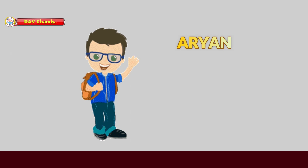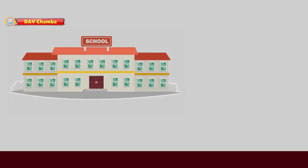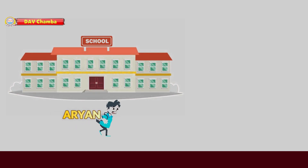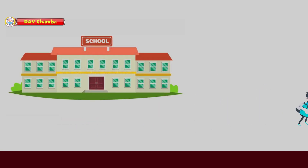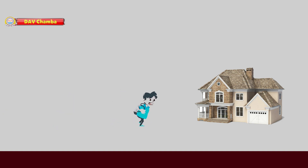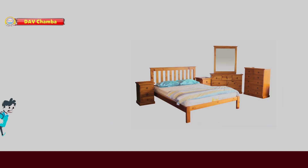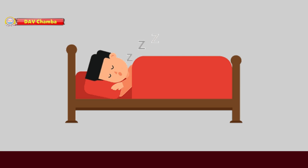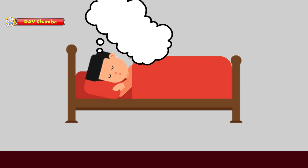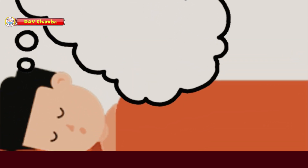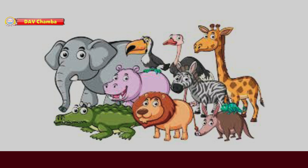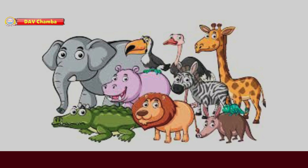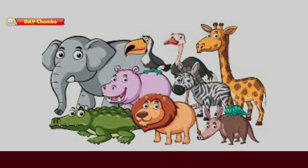There was a boy named Aryan. He studied in class 3. Little Aryan came home from school, ate his lunch, and fell asleep. He had a nice dream in his sleep. In his dream, he met some animals. One by one, all the animals introduced themselves to him. Let's see what each animal said.